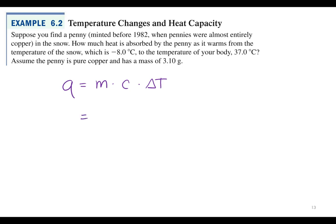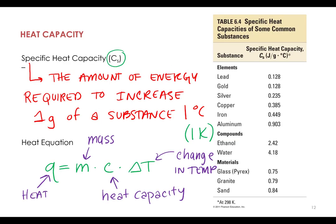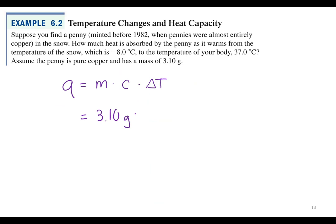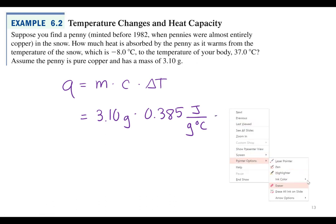So what's our mass? 3.10 grams. We'd have to look up the specific heat of copper. It's right here. 0.385. And the units for specific heat capacity are going to be joules per gram degrees Celsius. So that's 0.385 joules per gram degrees Celsius times delta T. We need to calculate that.